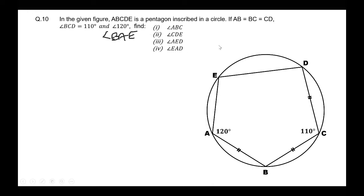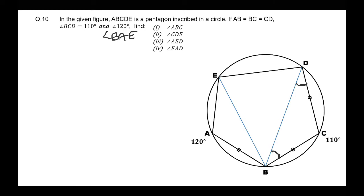For this, if we join BE and BD, we can find angle CDB which equals angle CBD because of the formation of an isosceles triangle. So angle CDB equals 180 minus 110 degrees divided by 2, by the angle sum property of a triangle. These two angles are equal, so 2x plus 110 degrees equals 180 degrees.